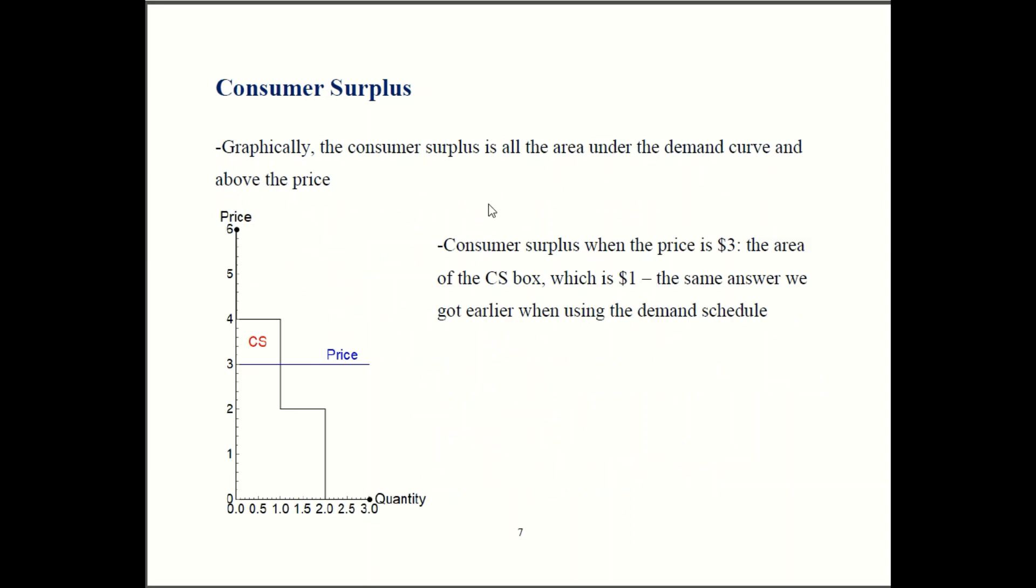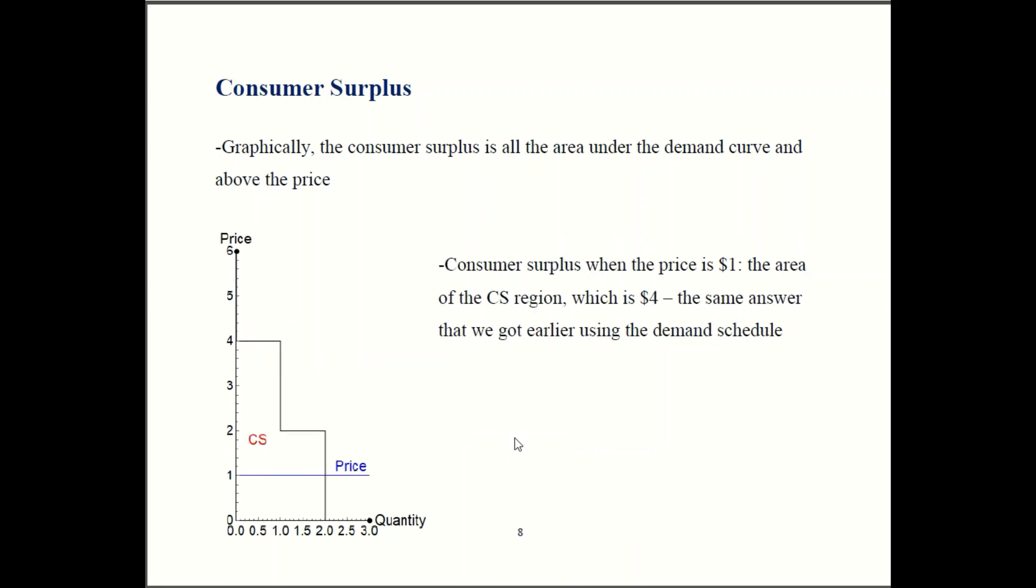So that was the first example we just verified. Now let's try it for the other example. In example two, we said the price was one and we had a consumer surplus of four dollars. Let's see if that's right. So in the graph, the claim is that consumer surplus is all the area below demand and above price. So it's this L-shaped region over here.